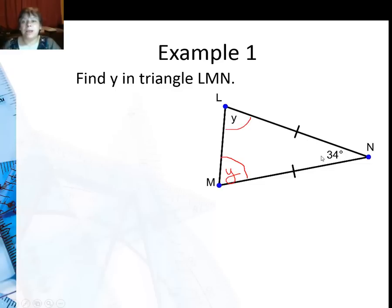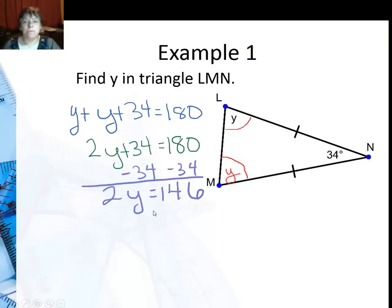Now I can say Y plus Y plus 34 is going to be 180. Combine like terms, subtract 34 from both sides, and I get 2Y is 146. So Y is 73.